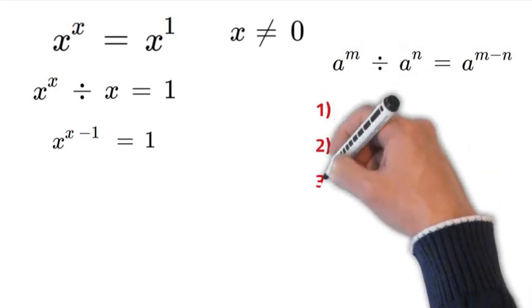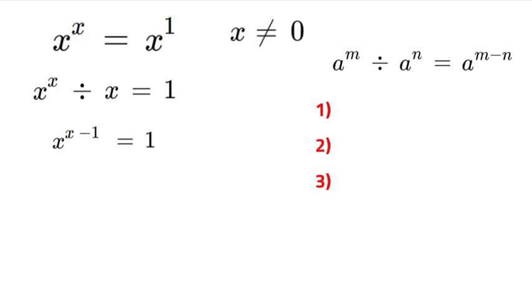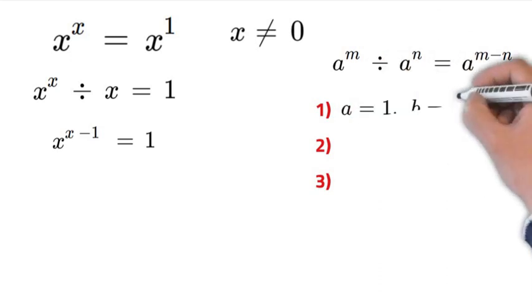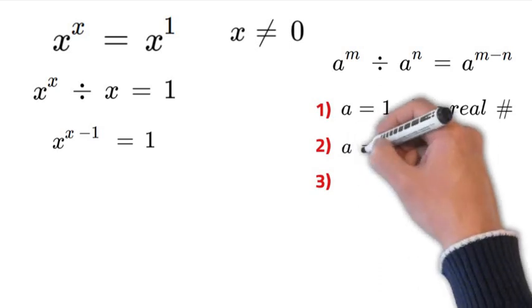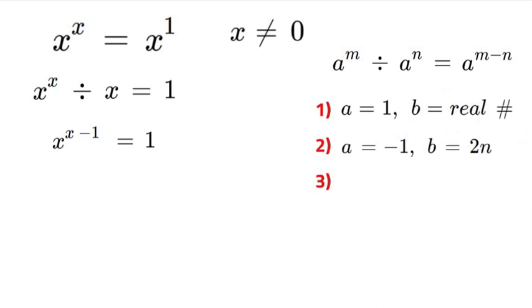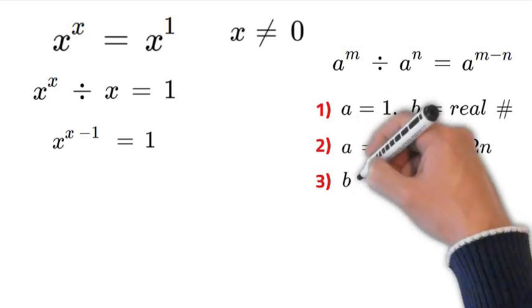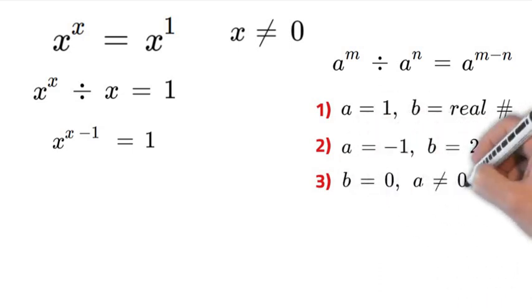We are going to use three principles to try and figure this out. The first one is if a is equal to 1, then b is a real number. If a is equal to negative 1, then b is equal to any positive number. And if b is equal to 0, then a cannot be equal to 0.